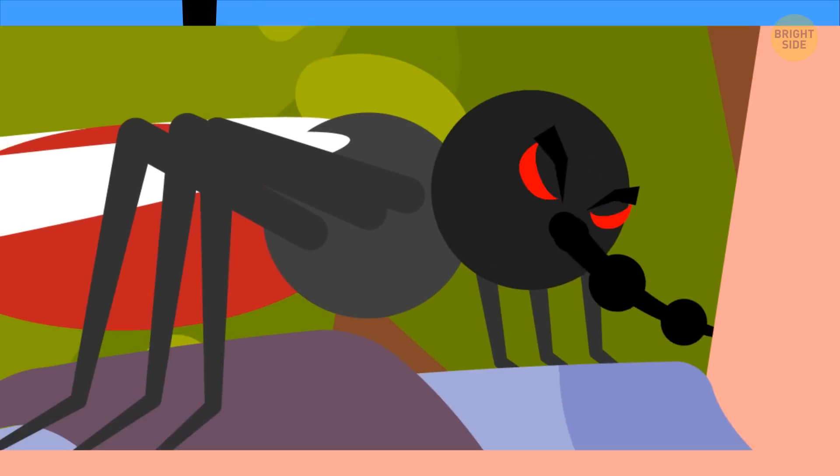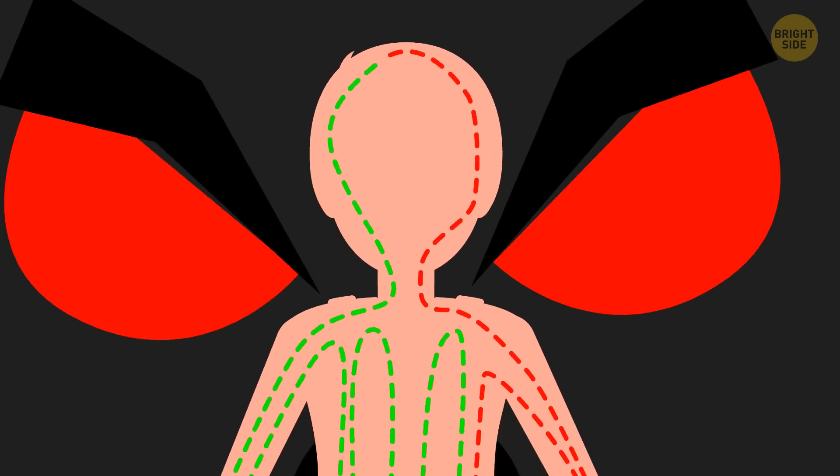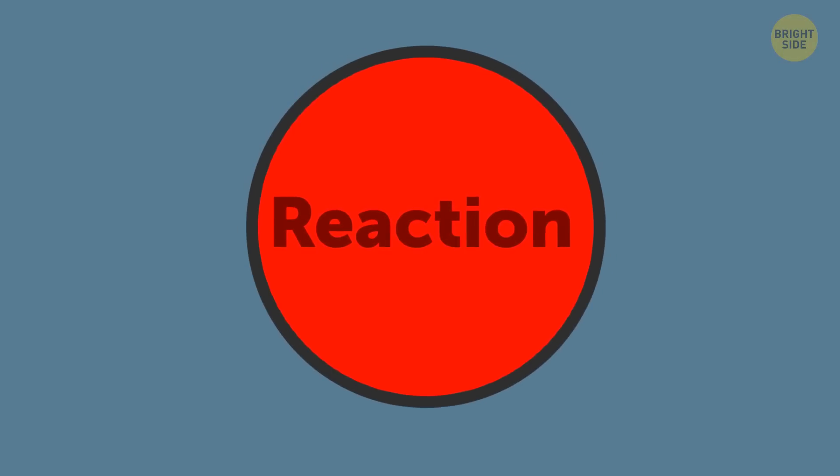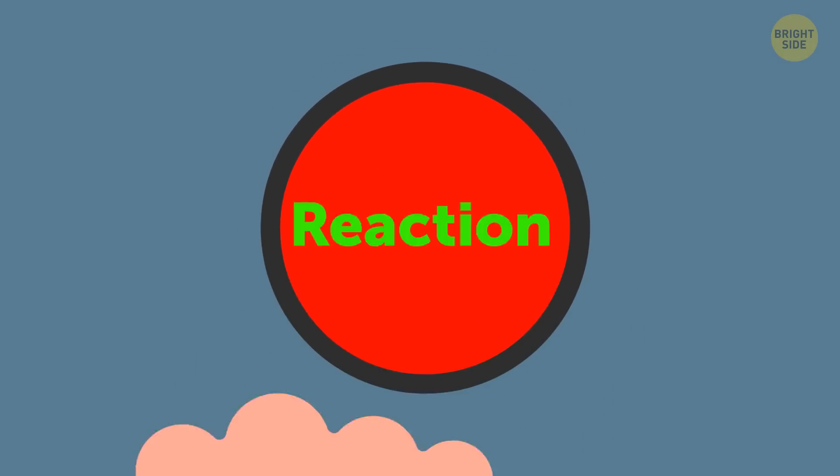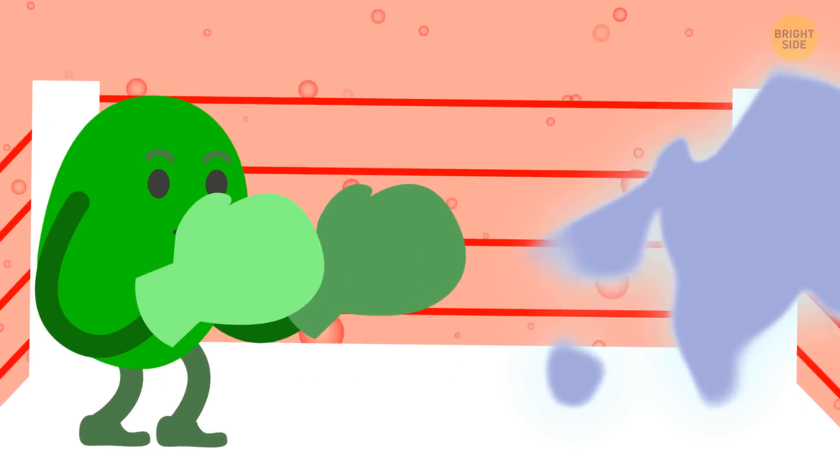The insect pierces the skin with a special mouth apparatus called a proboscis. The mosquito starts pumping blood through this needle. Its saliva gets into Barry's body and causes an allergic reaction. More precisely, it's Barry's immune system that starts this reaction. It perceives the mosquito's saliva as an enemy and sends a unique chemical substance to the bite site. The fight between this substance and the invader causes an allergic reaction.